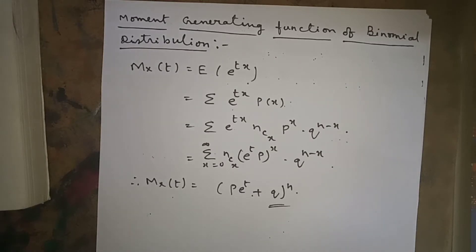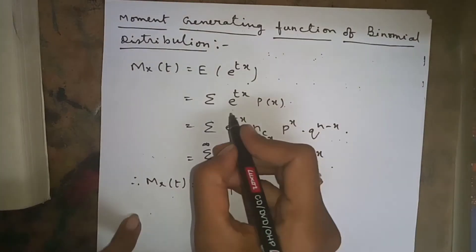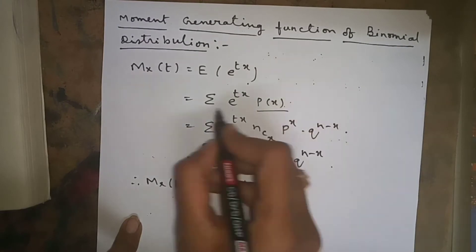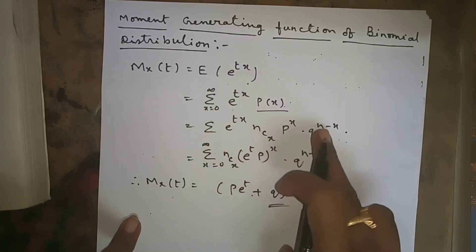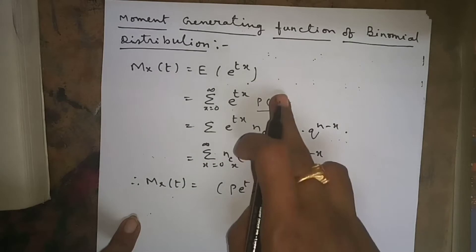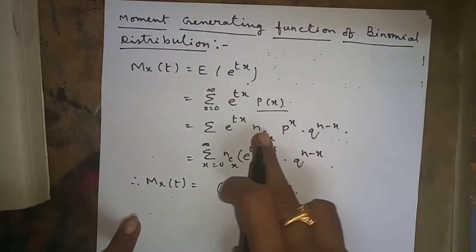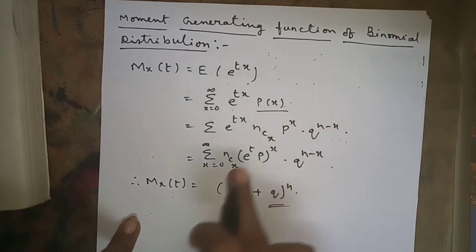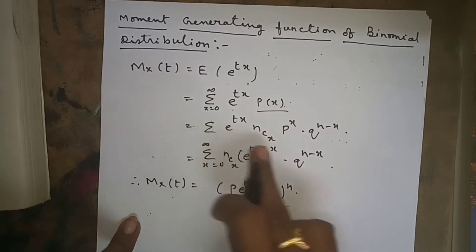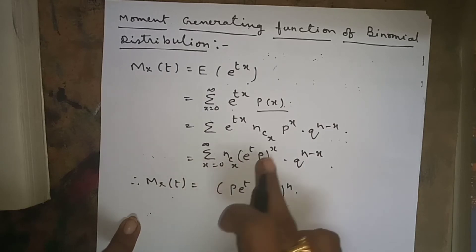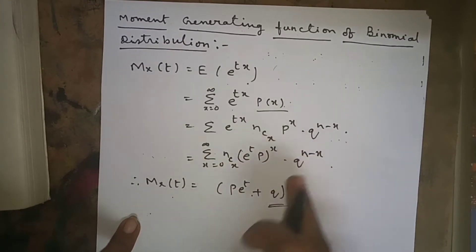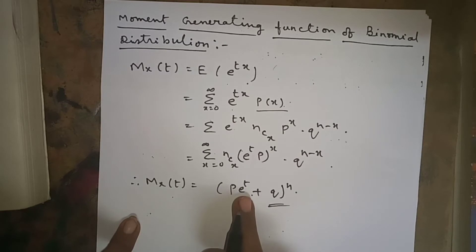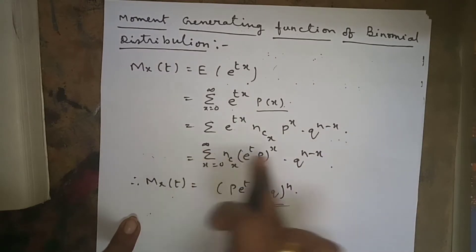E(e^(tx)) is equal to the sum from x=0 to infinity of e^(tx) times p(x). In binomial distribution, p(x) = nCx * p^x * q^(n-x). Substituting this binomial PMF, we get sigma of nCx * (e^t * p)^x * q^(n-x). By using the binomial theorem, this simplifies to (p*e^t + q)^n.